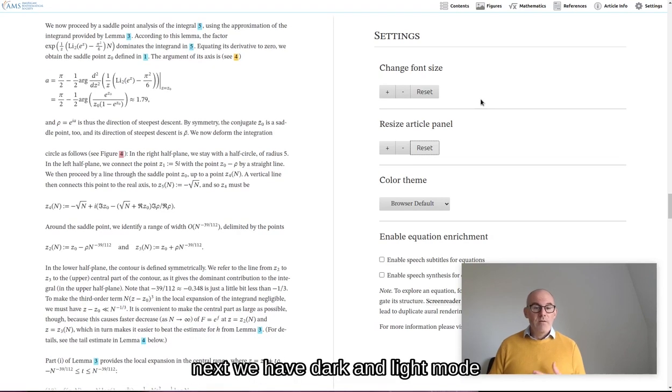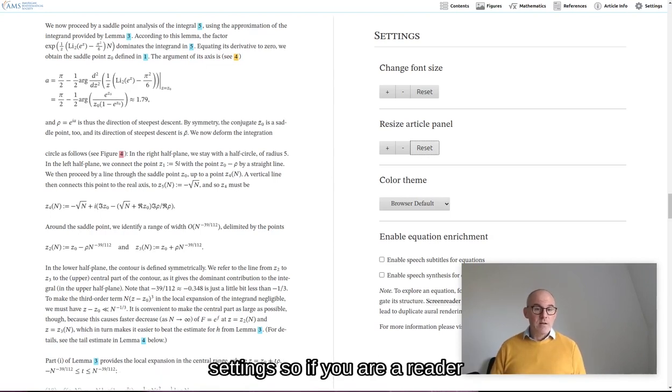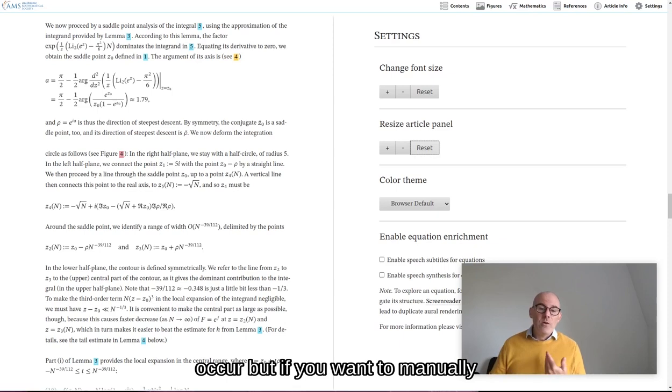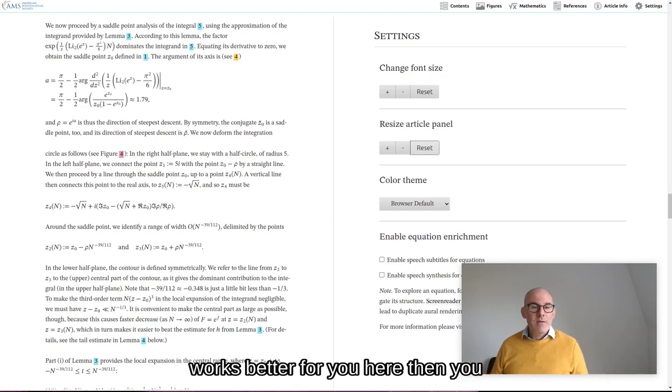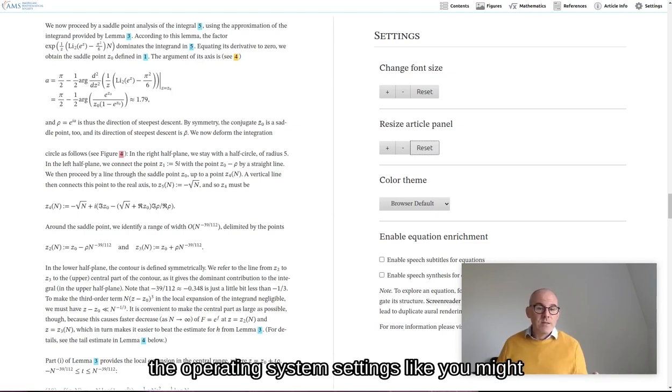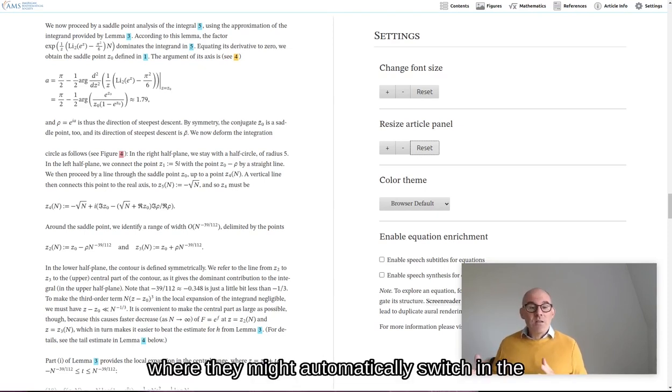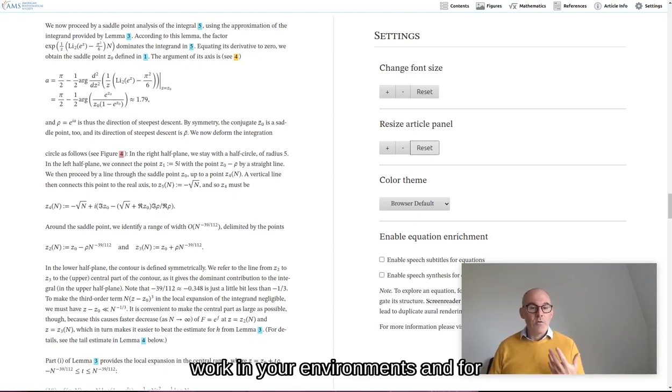Next, we have dark and light mode settings. Initially, MathViewer will follow the browser settings. So if you are a reader with a device set to use dark mode, for example, then that will automatically occur. But if you want to manually override that to be in light mode again, just because it works better for you here, then you can do that too. And you can always revert to the browser defaults. Say if these come from the operating system settings, like you might find on a mobile device, a tablet, where they might automatically switch in the mornings and evenings. All of these just work in your environments and for your needs. Let me try this as well. So we can change to a dark theme. You'll see the colors changing. And we can go back to the browser default.